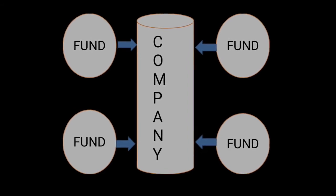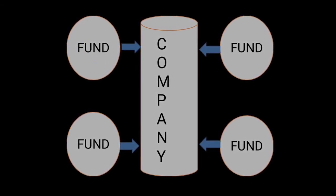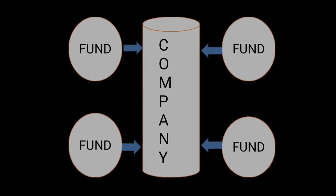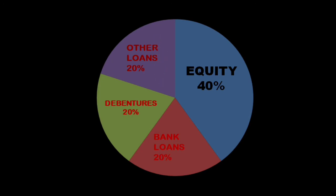The funds from various sources becomes the total capital of the company. Here you can see in this chart the various sources of capital from where a company raises its finance. The company has collected 20% of its total capital by issuing debentures, 20% from bank loans, 20% from loans from other financial institutions, and the remaining 40% is raised by issuing equity shares.